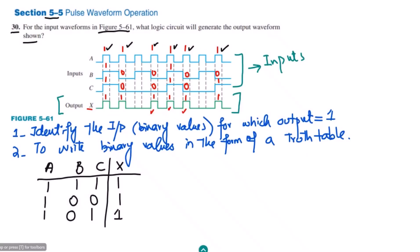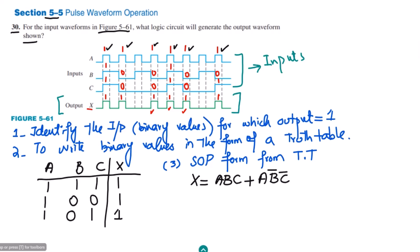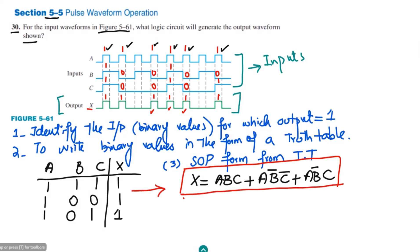After finding the truth table, Step 3 is to find the SOP (Sum of Products) form from the truth table. From this truth table we can see that the SOP expression is: X = ABC + AB'C' + AB'C. This is the SOP form for the truth table we have here.